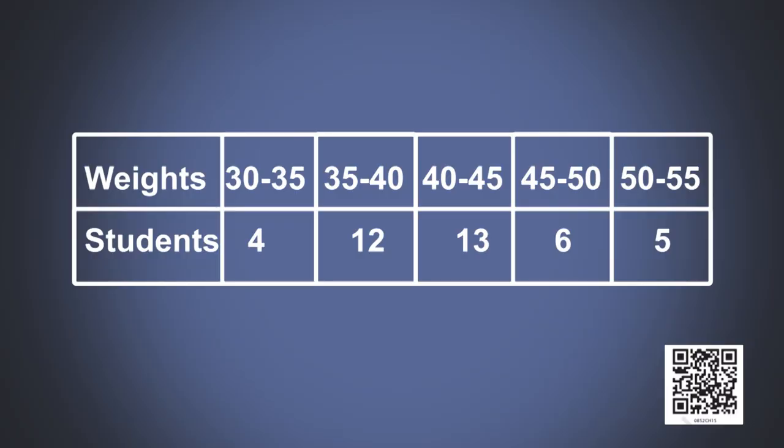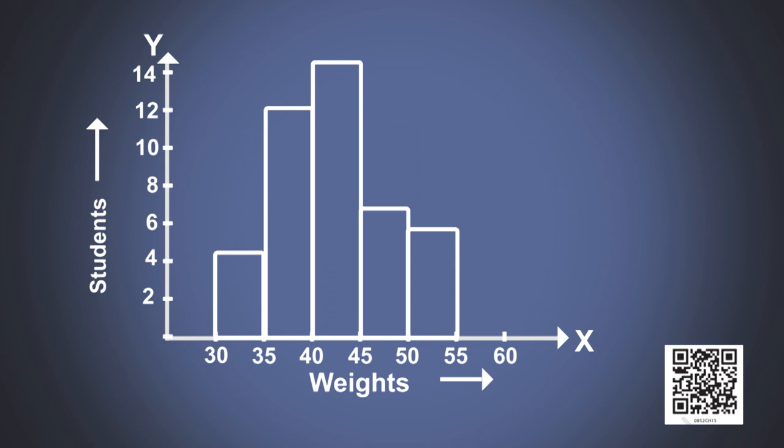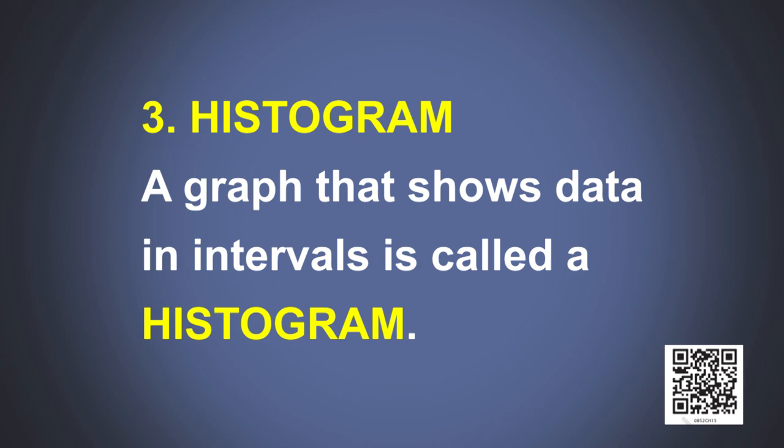Now look at this graph. Students of eighth standard are divided according to their weights. Here there is no whole but it has bars over the intervals. There are no gaps between the bars as there are no gaps between the intervals. So a graph that shows data in intervals is called a histogram. These are the graphs which you have already learned in your previous year.